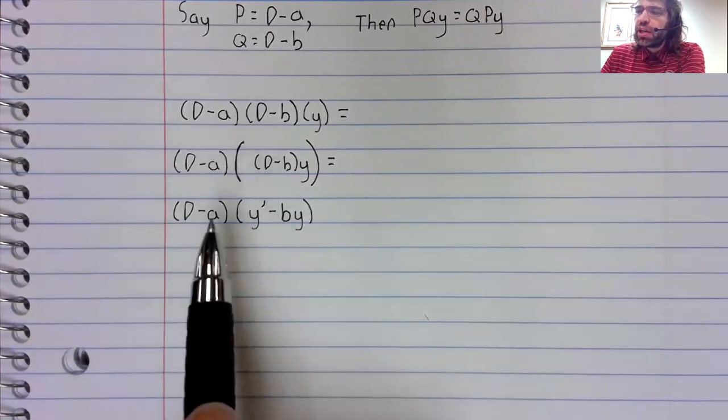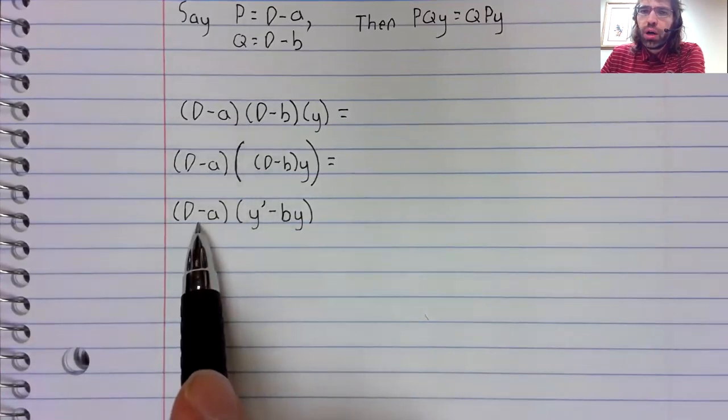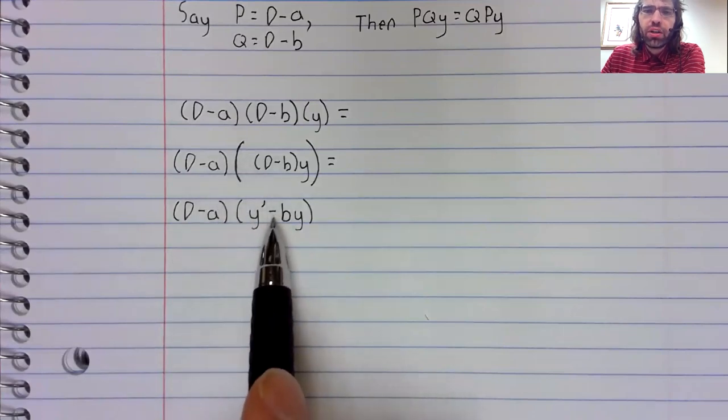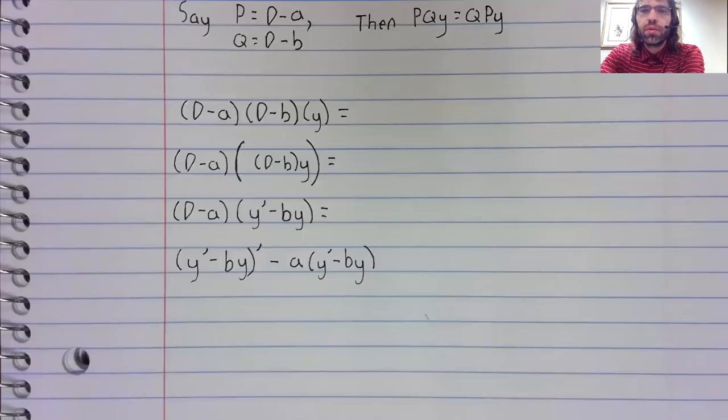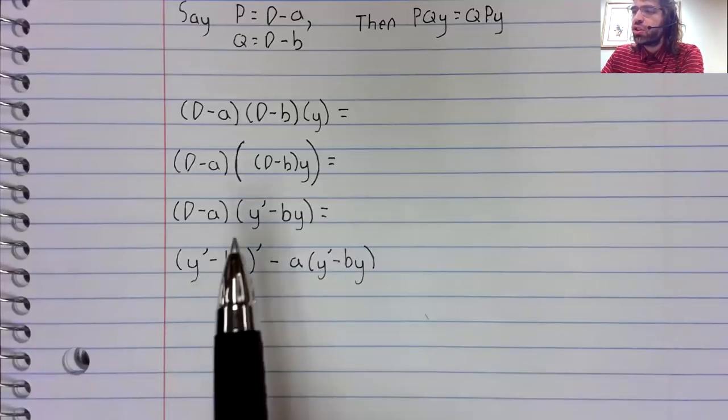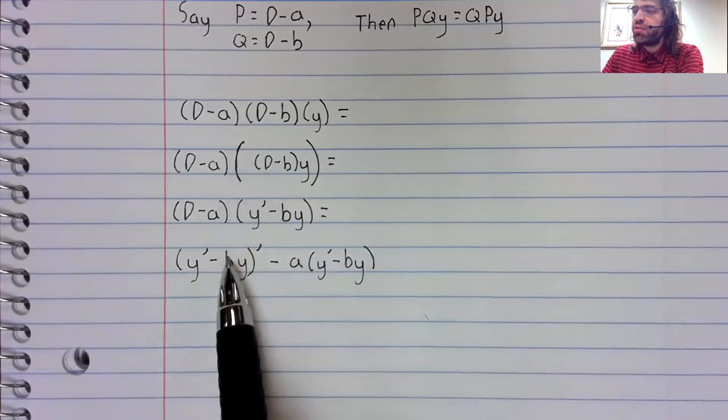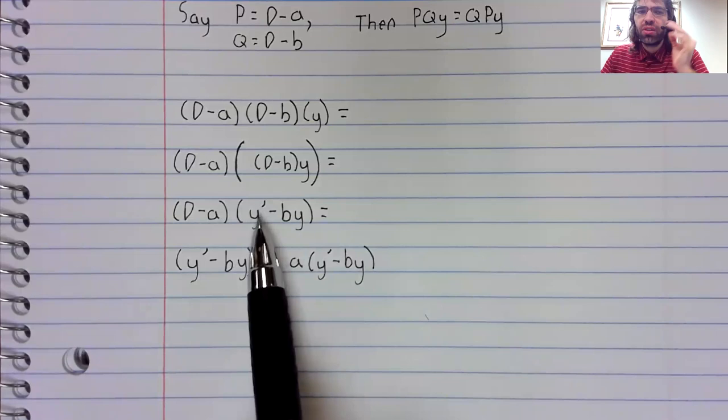And now we have a linear differential operator applied to a function. Again, we'll just use the definition of the linear differential operator, which is that it's the derivative of this minus a times this.